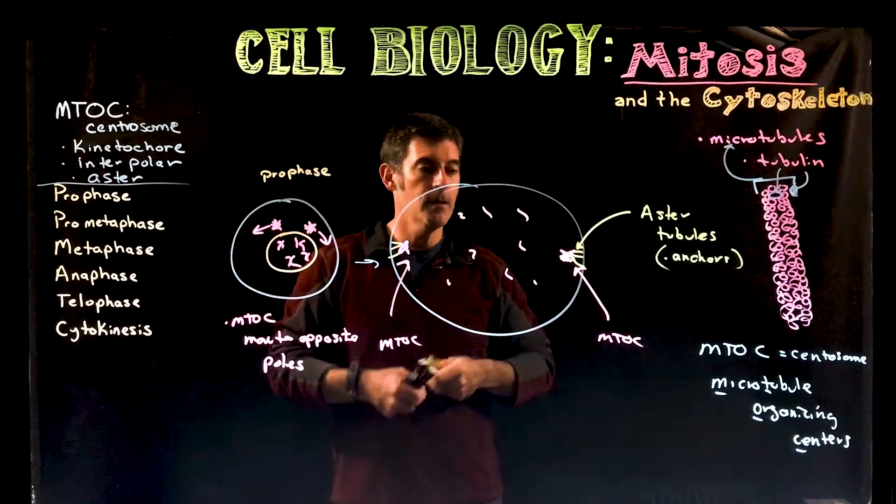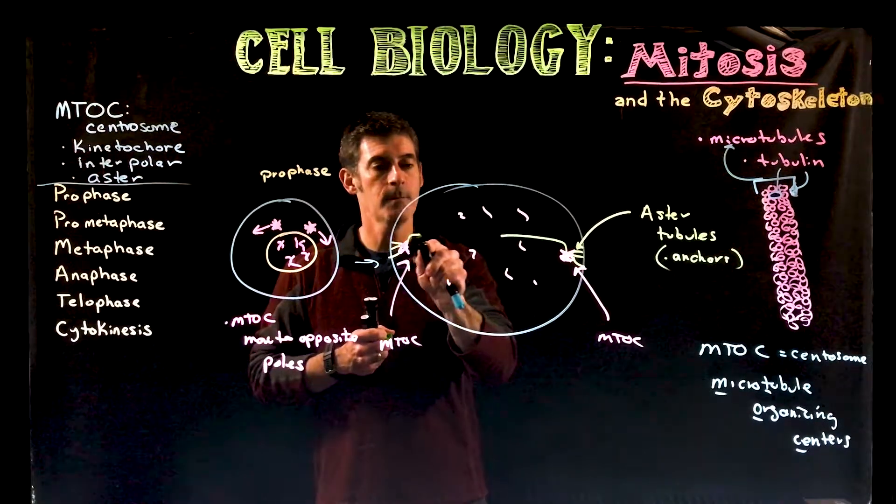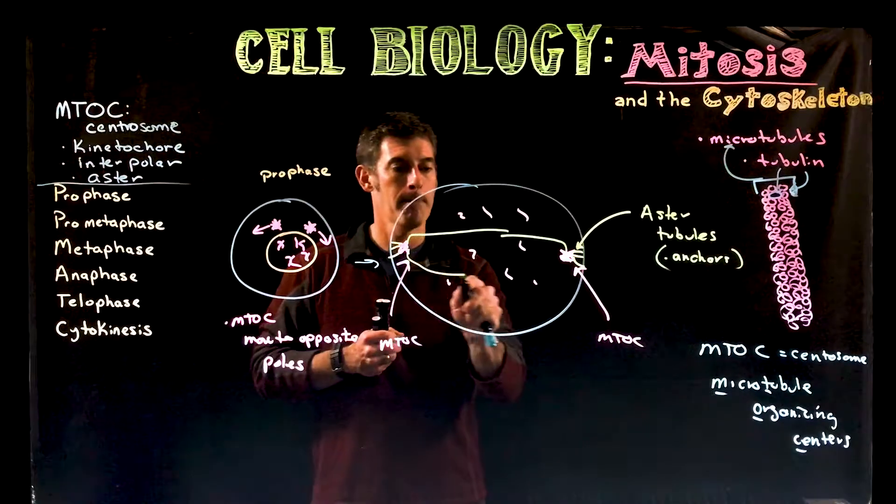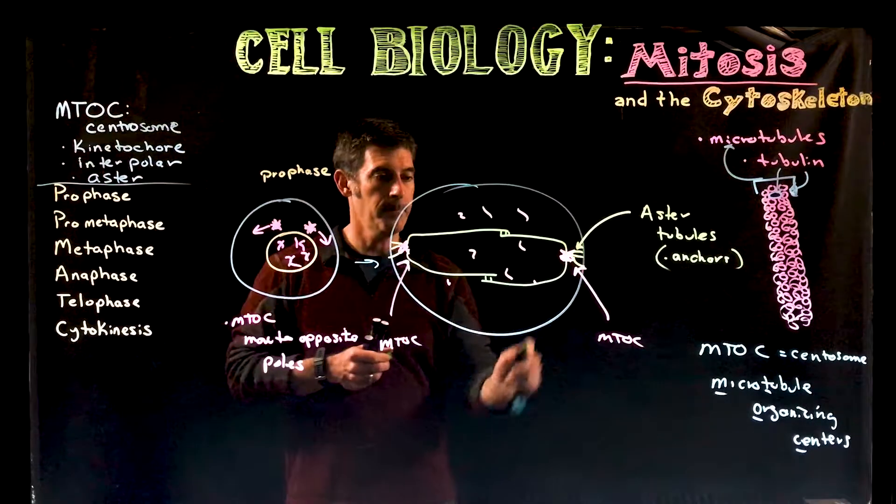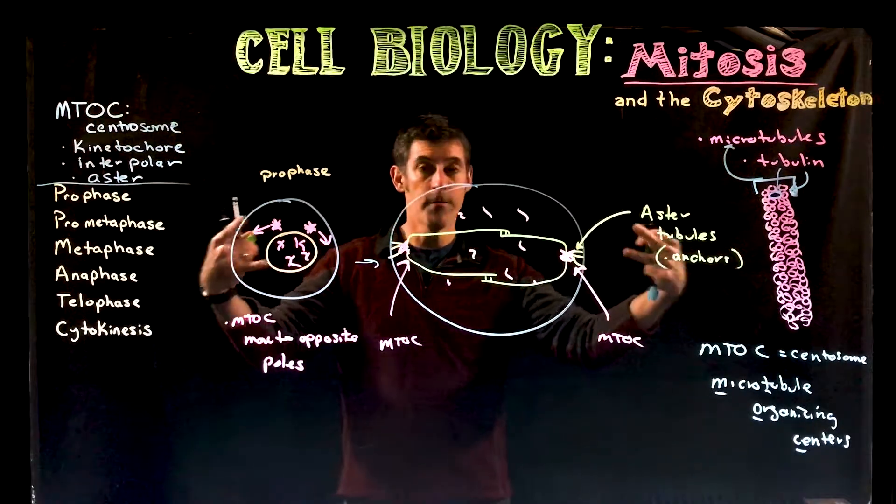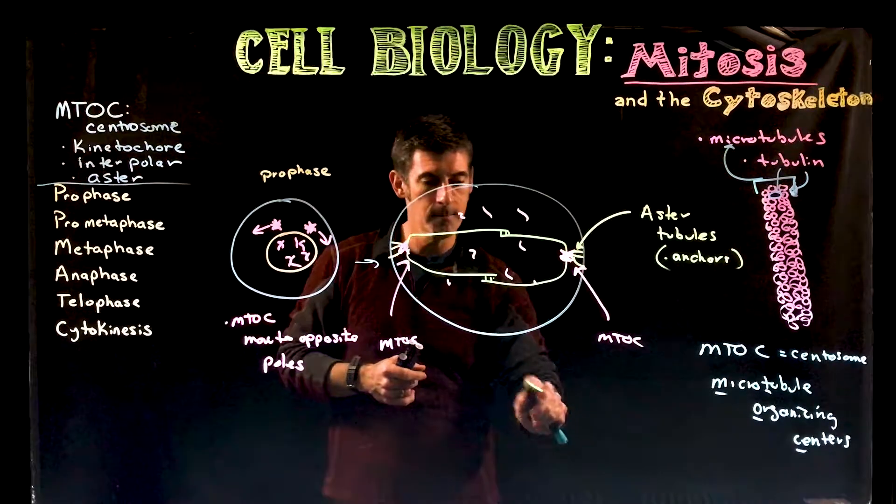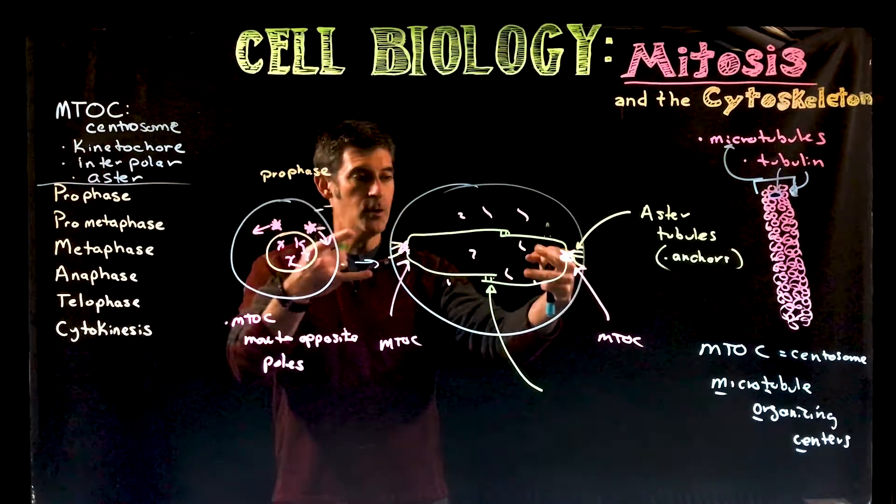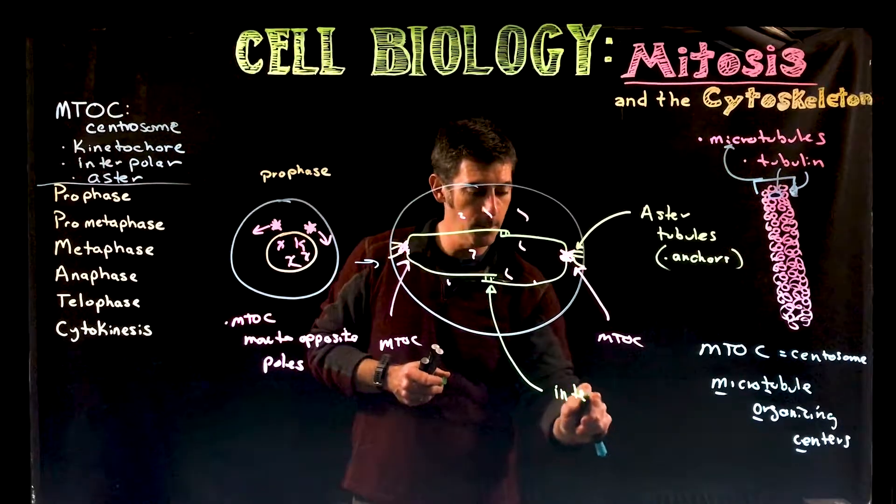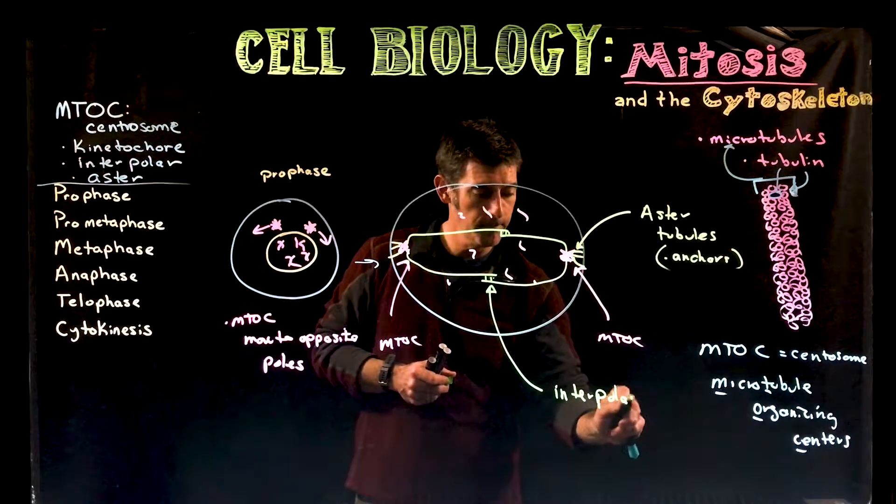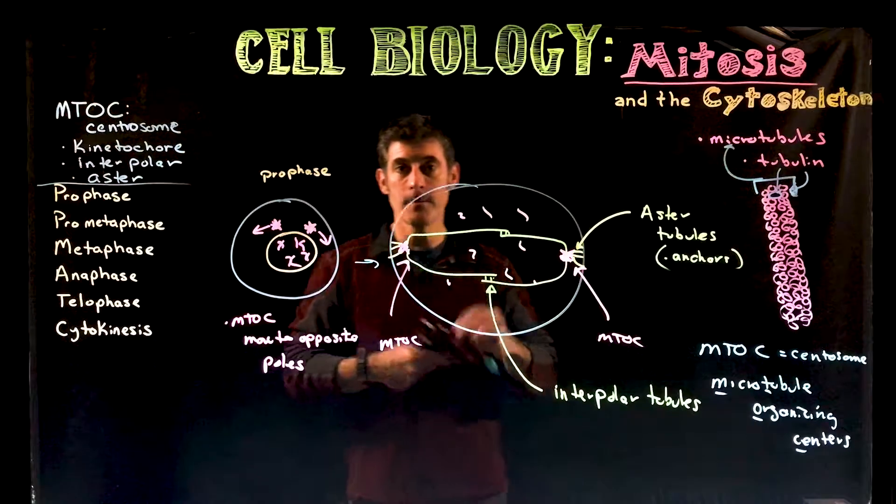The MTOCs are going to be sending out another set of microtubules that are going to connect to each other. These are tubules that go from one pole, not all the way to the other pole, but they're connected essentially to the other pole like this. So these tubules that are connected between the two MTOCs are called interpolar tubules.